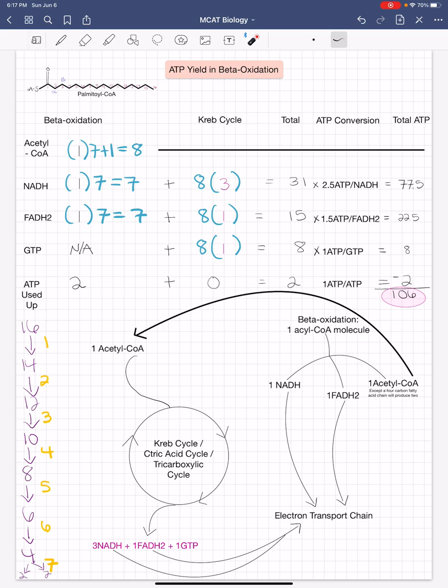Therefore, we're going to multiply 31 molecules of NADH by 2.5, which will give us our total of ATP molecules, 77.5.